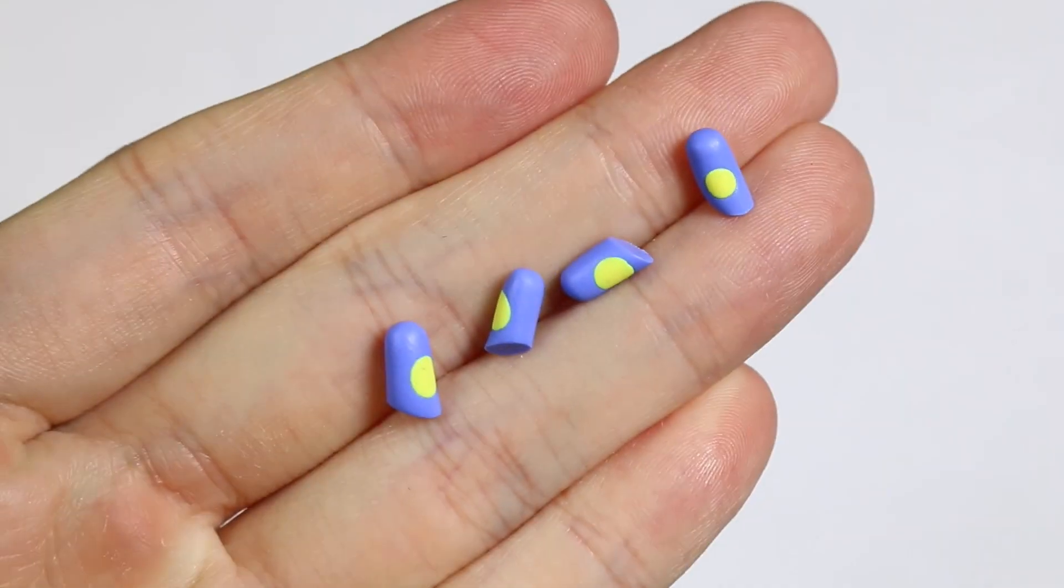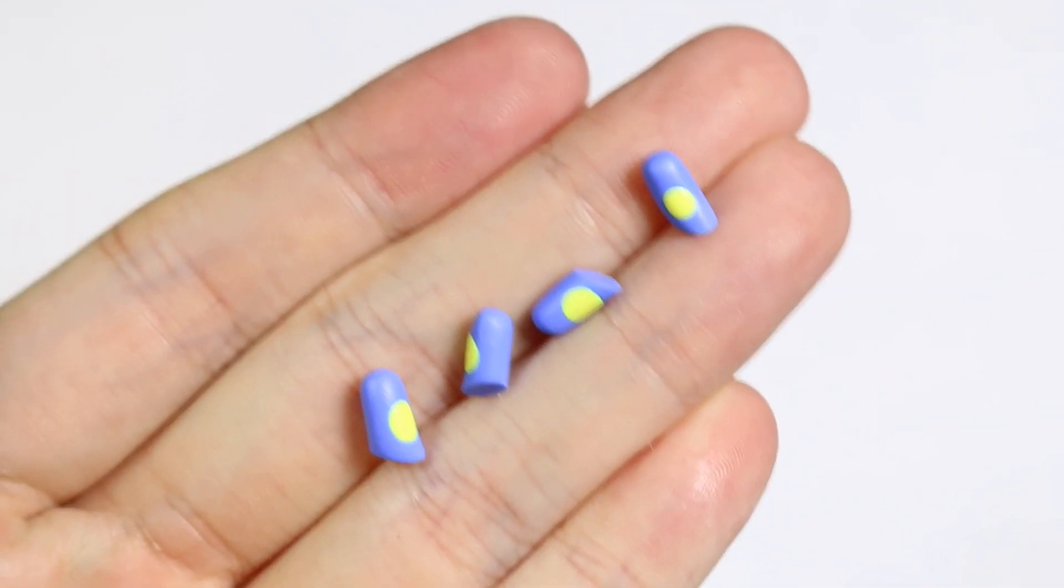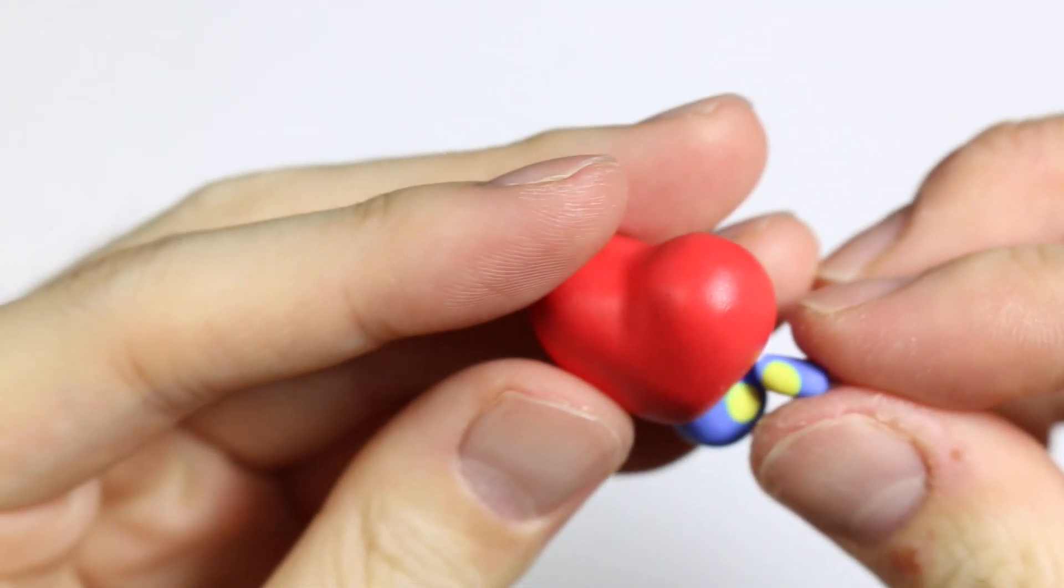And we are going to make four of those. For the next step, we're going to add the limbs onto the body.